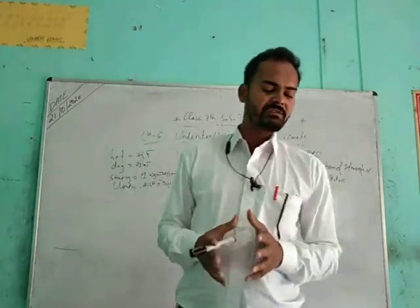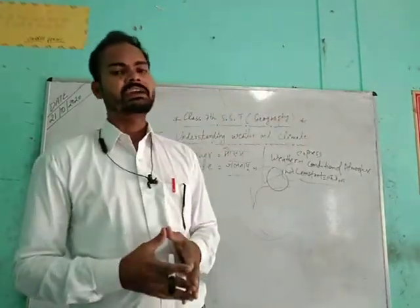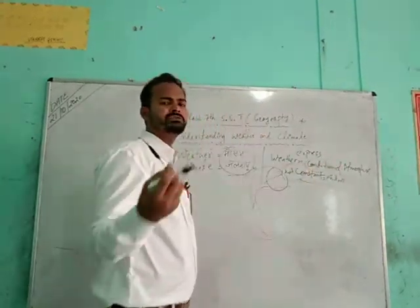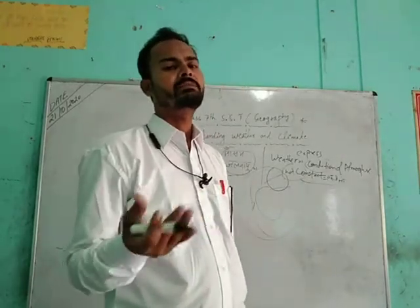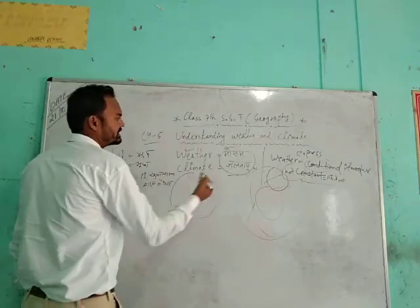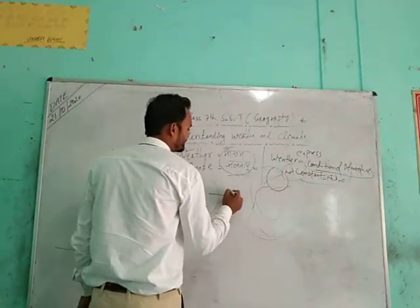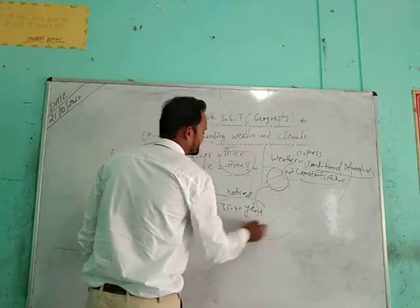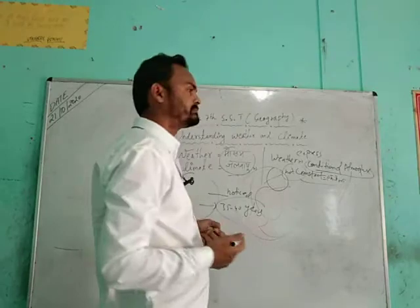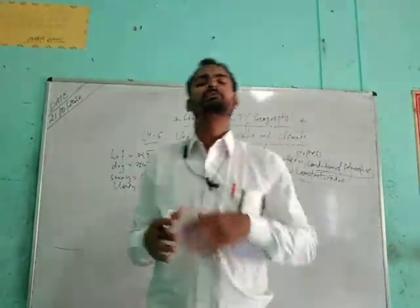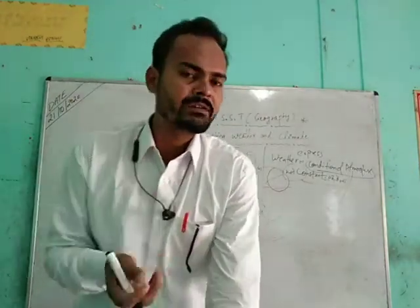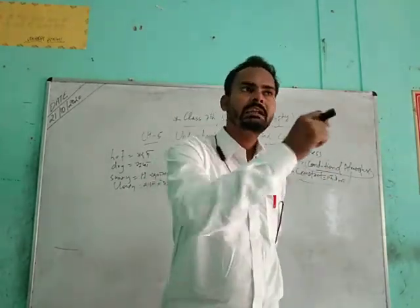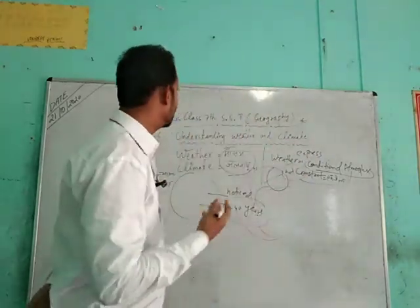The term 'climate' refers to the average weather condition of a larger area over a long period of time — 35 to 40 years. The condition of the atmosphere, observed and examined for 35 to 40 years: if the average weather of that area is cold, we say the climate of that area is cold; if it is hot, we say the climate is hot.